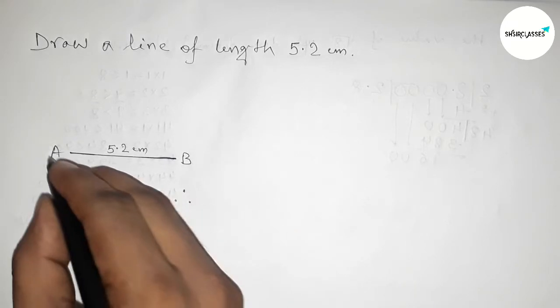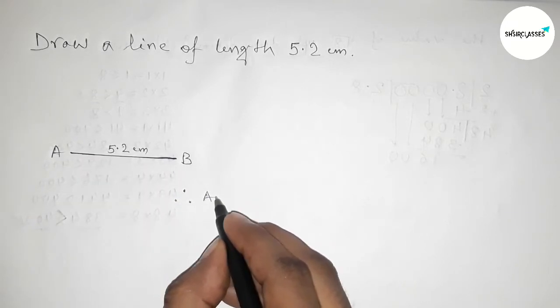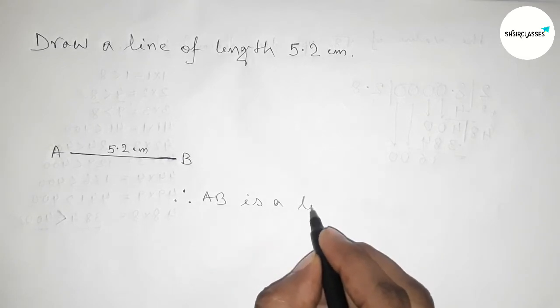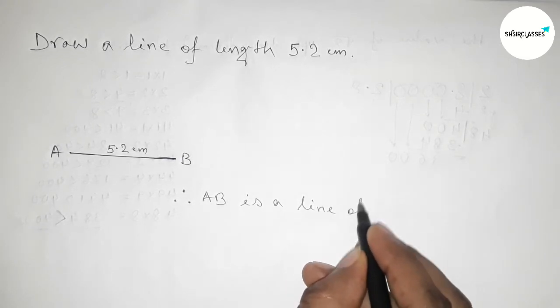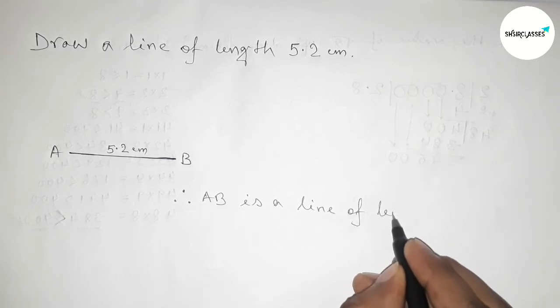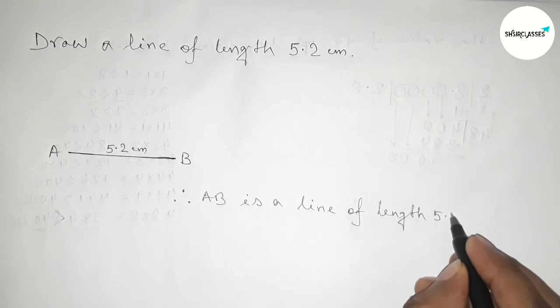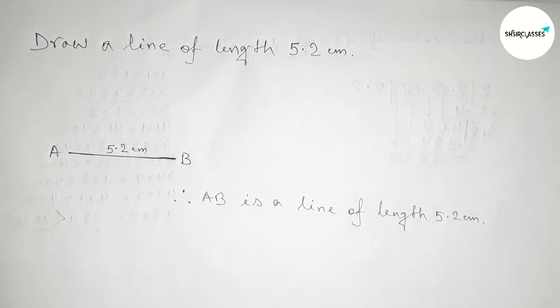And therefore here AB is a line of length five point two centimeter. And by this way you can draw a line of length five point two centimeter in easy way. So that's all, thanks for watching. If this video is helpful to you then please share it with your friends.